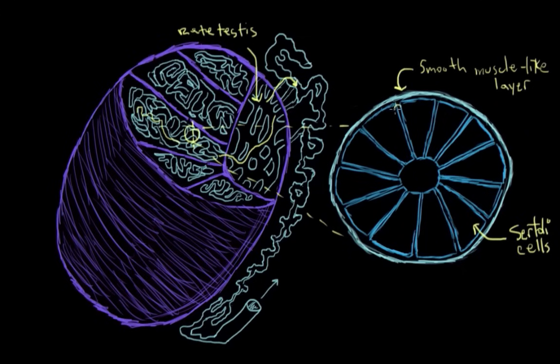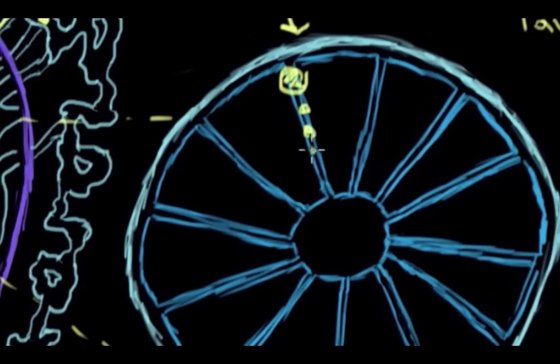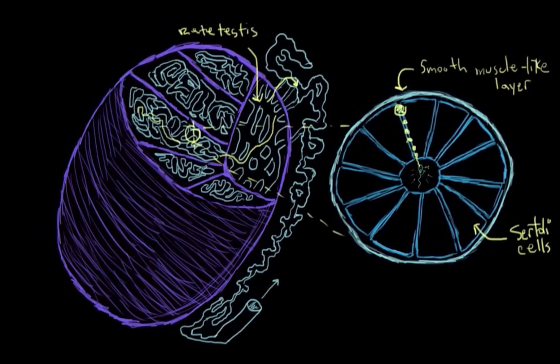The general idea is that sperm develop between two Sertoli cells, and they sort of develop as they shuffle down between the two cells toward the lumen here. By the way, a lumen is a hole down the center of a hollow tube. For example, the lumen of a garden hose is the part where the water travels through. So, let's get to the details of how this all happens.